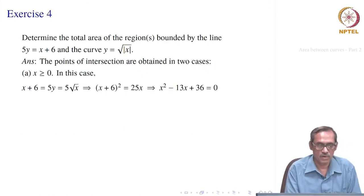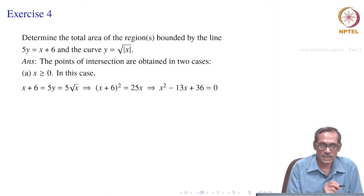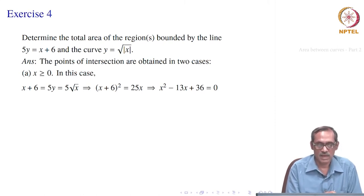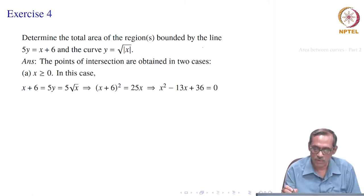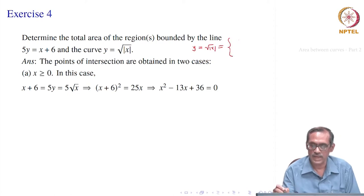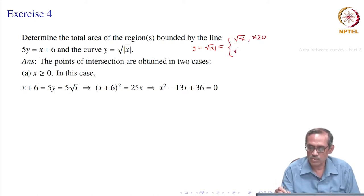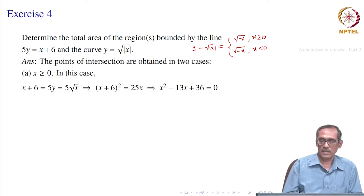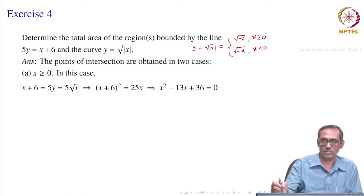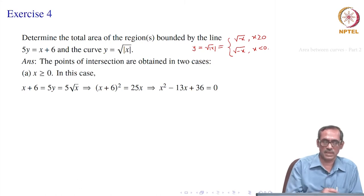Let us go to exercise 4: determine the total area of regions bounded by the line 5y equal to x plus 6 and the curve y equal to square root of |x|. Using the definition of |x|, the curve is square root of x for x greater than or equal to 0, and square root of minus x for x less than 0. So we have to consider two cases — when x is positive and when x is negative — then find the corresponding regions and add them up.